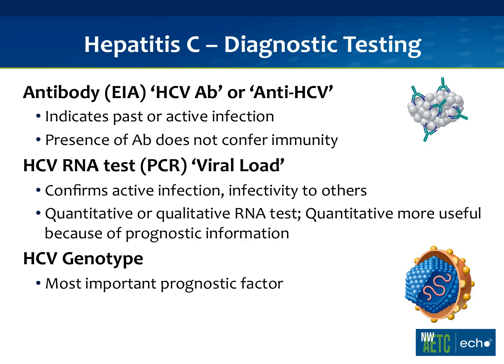In terms of workup, the first test you want to do is a hepatitis C antibody — now up to the fourth generation, very sensitive and specific. The key thing is that it shows whether a person has been exposed to hepatitis C; it doesn't show they're actually infected. Also, the presence of antibody does not confer immunity. So you need a confirmatory test. Unlike HIV, we don't do the RIBA — we go straight to a viral load, and if positive that shows active infection. I typically recommend going straight to real-time PCR because it's just as sensitive as the qualitative and the same price.